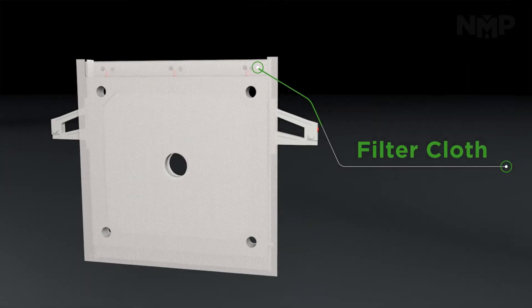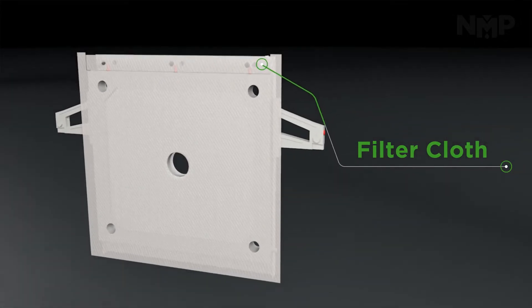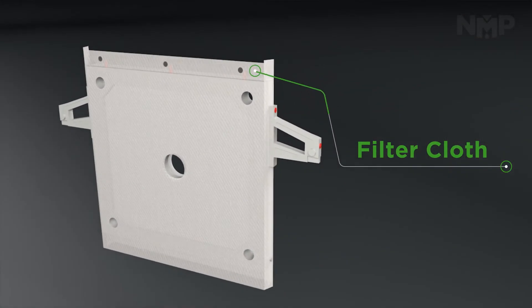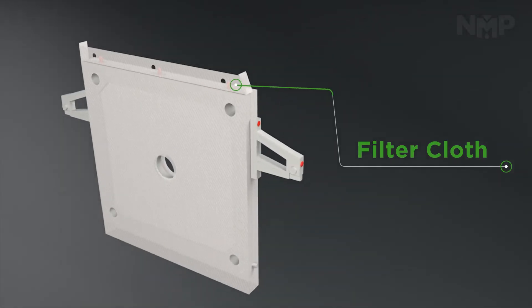The filter cloth is attached to both sides of a filter plate. Solids build up on the cloth to form a filter cake, separating liquids from solids.